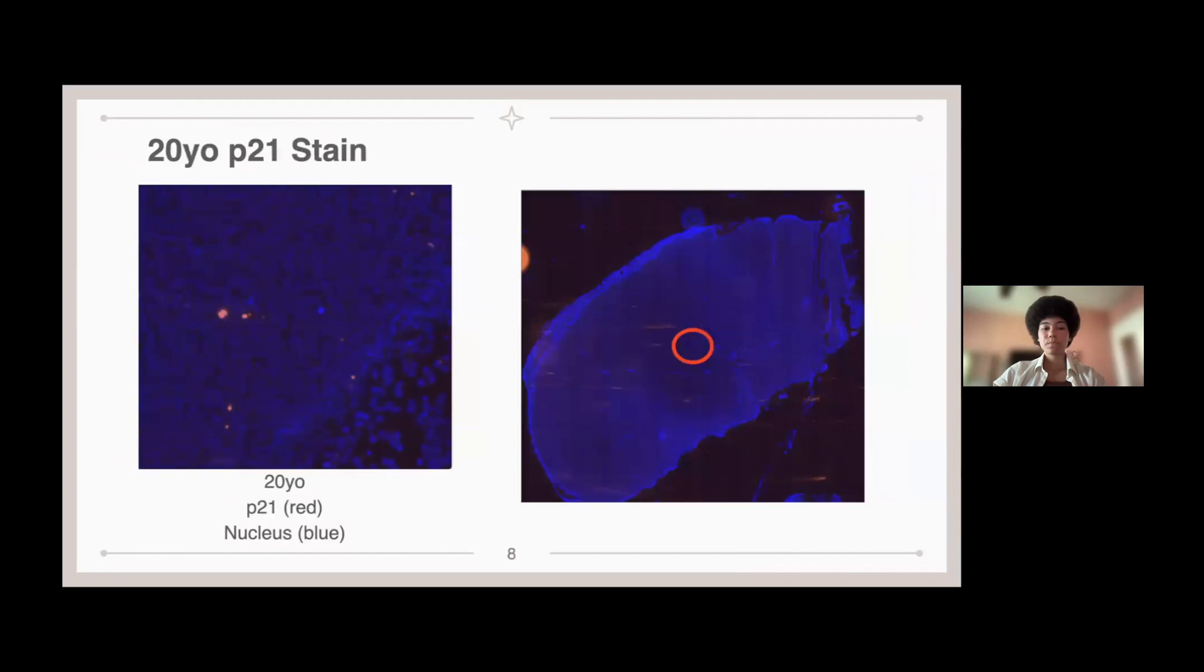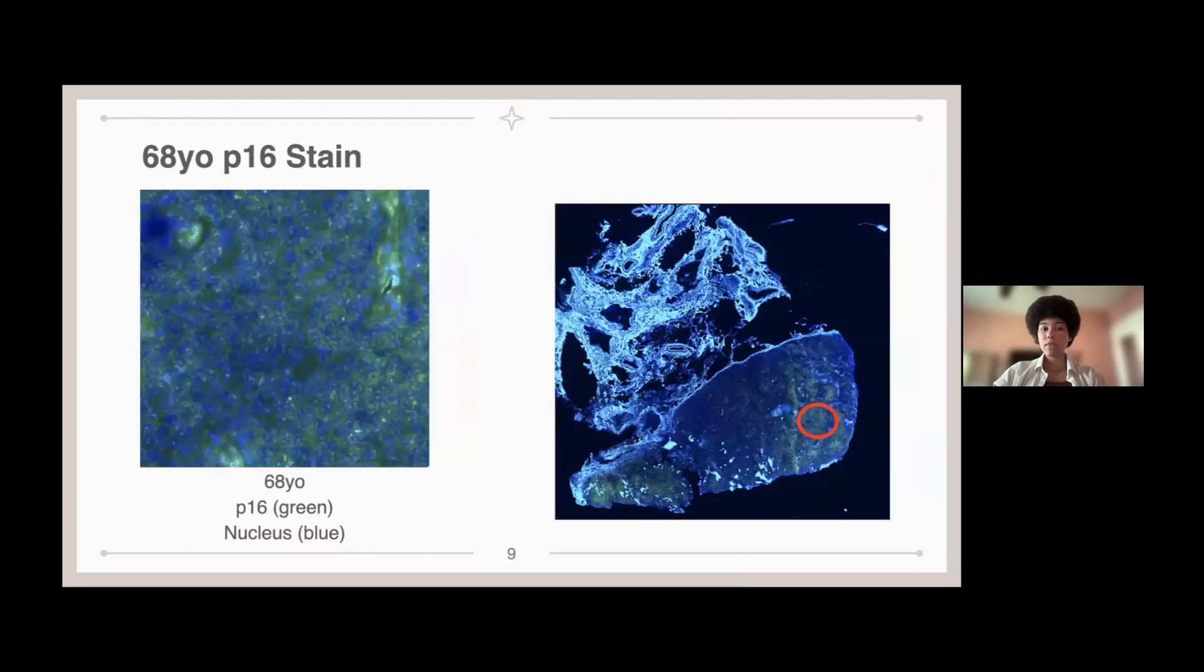And then this is the 20-year-old P21 stain. Again, the P21 is in red. The nucleus is still in blue. As you can see, there's just not a lot of red dots showing up, therefore indicating not a lot of P21 exhibited in this tissue.